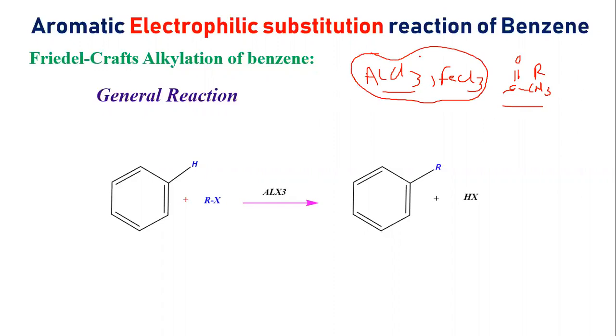So this is Friedel-Crafts Alkylation and Acylation. Basically, for Friedel-Crafts Alkylation, what is the mechanism? Let's see. Benzene ring is simple in the general reaction. Alkyl halide we take AlCl3, AlX3, or AlBr3.